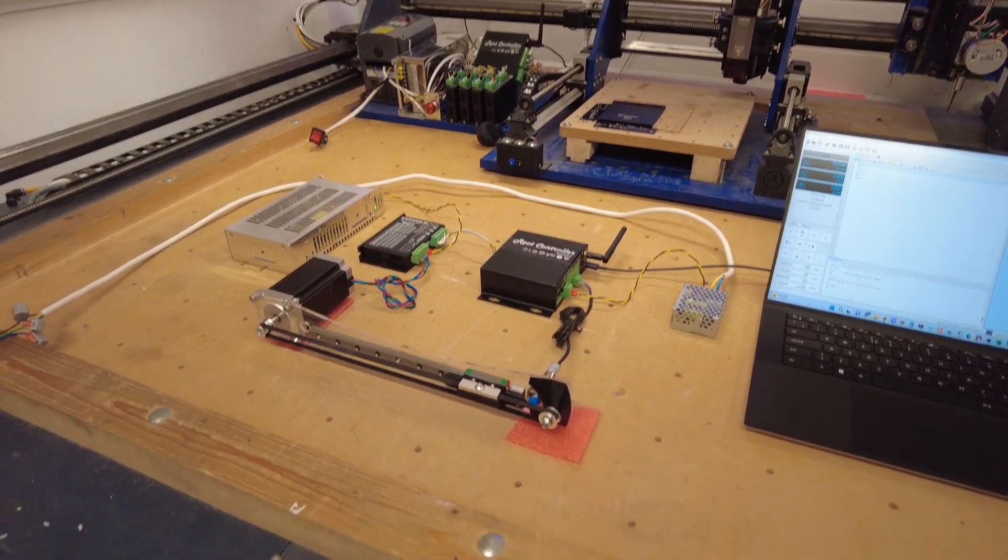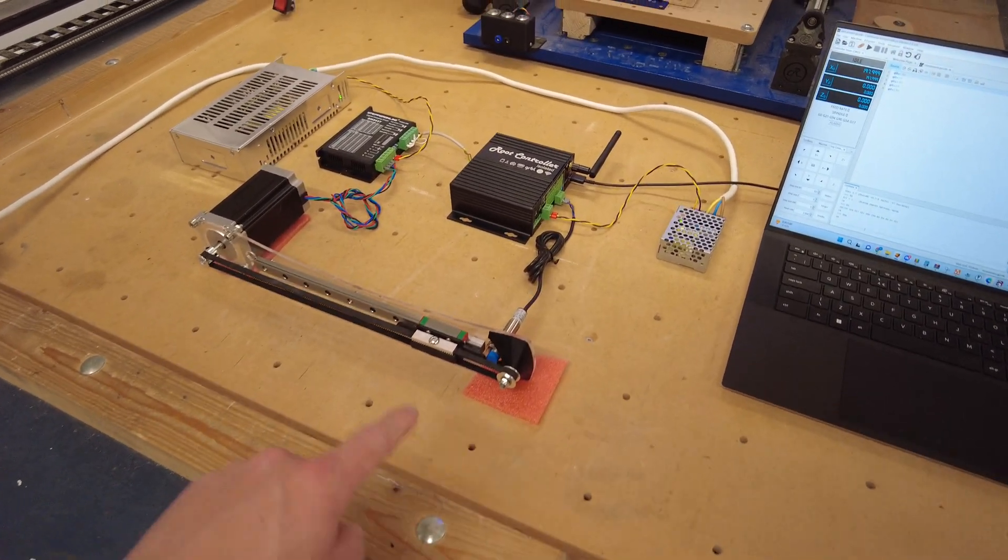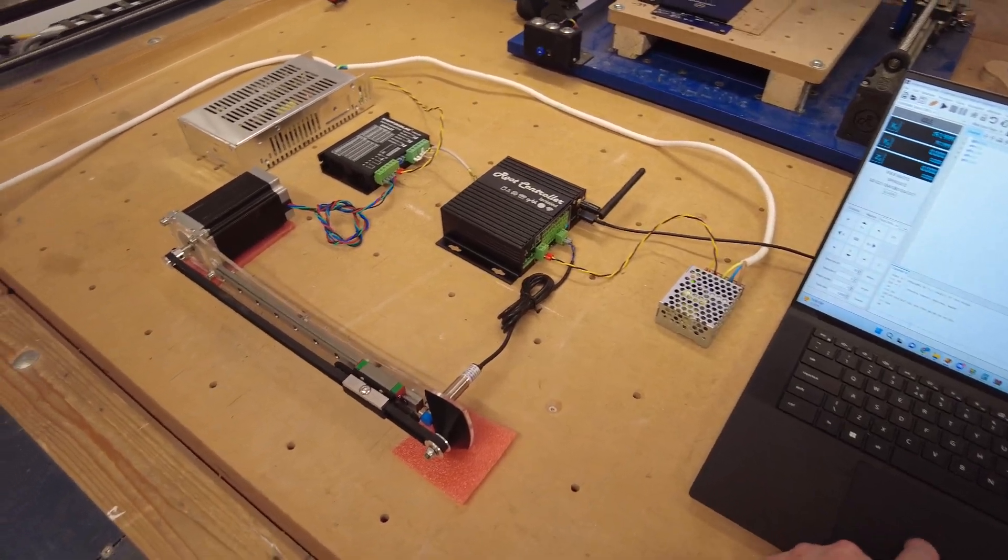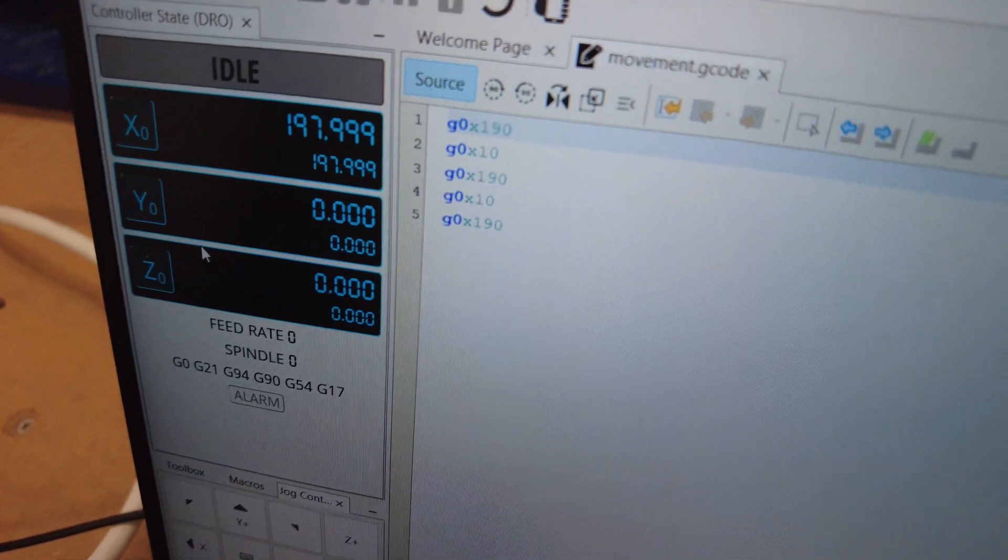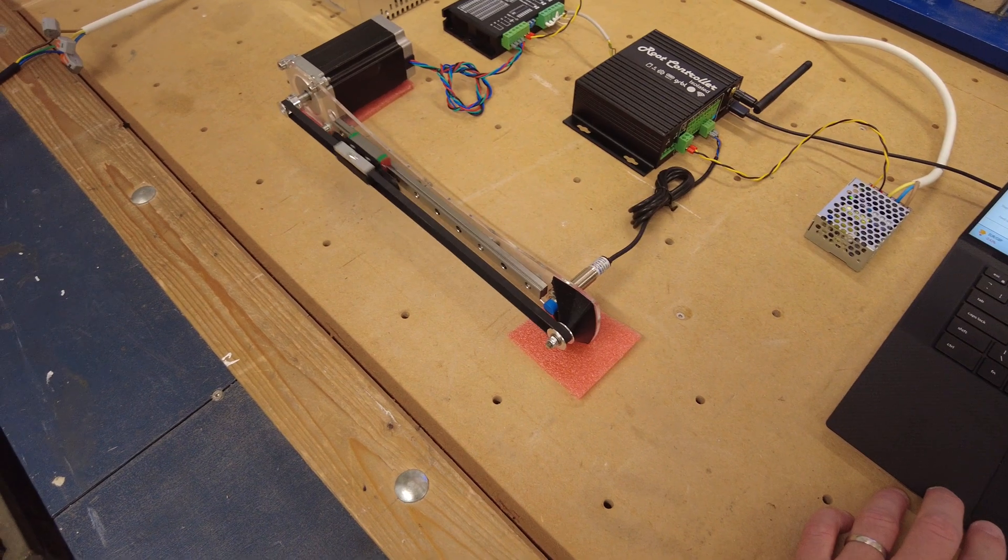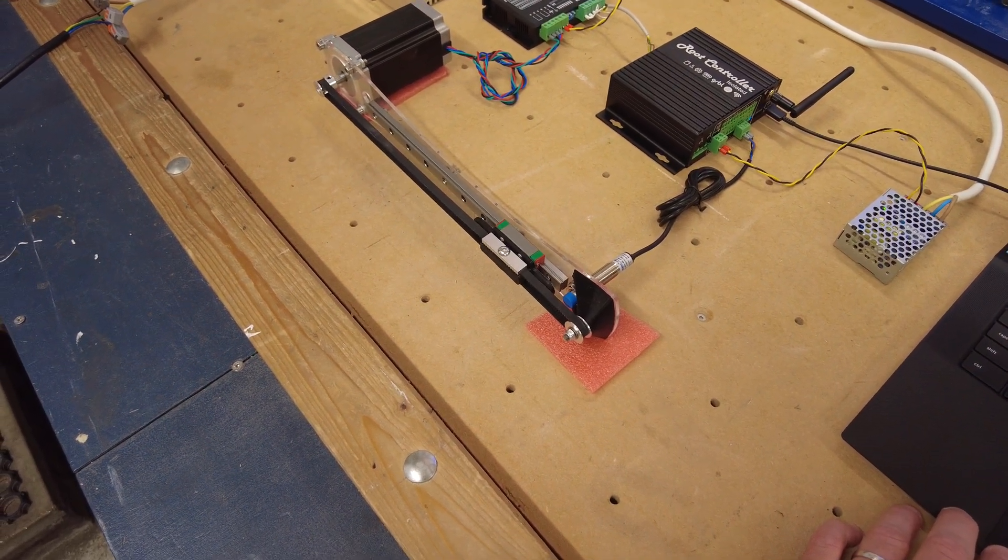I've written a small quick G-code command or script that just moves this back and forth to show it working. I've got my small job there in G-code, and if I hit play - perfect. We'll do it once more. And there you have it, one single-axis CNC machine.